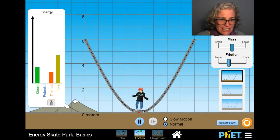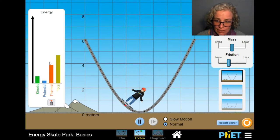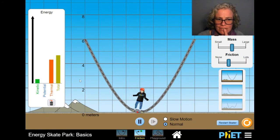What do you see changing now that there's friction? Look, there's a new bar, thermal. What does that have to do with friction?